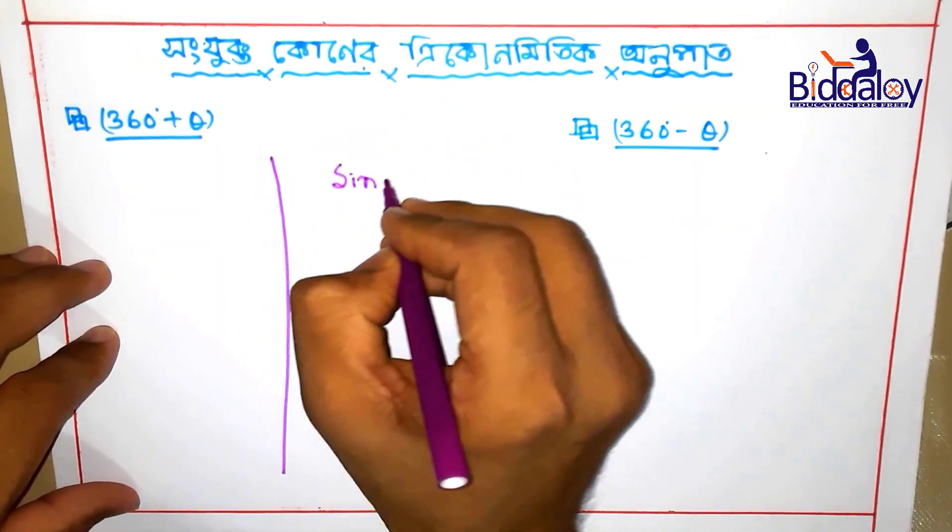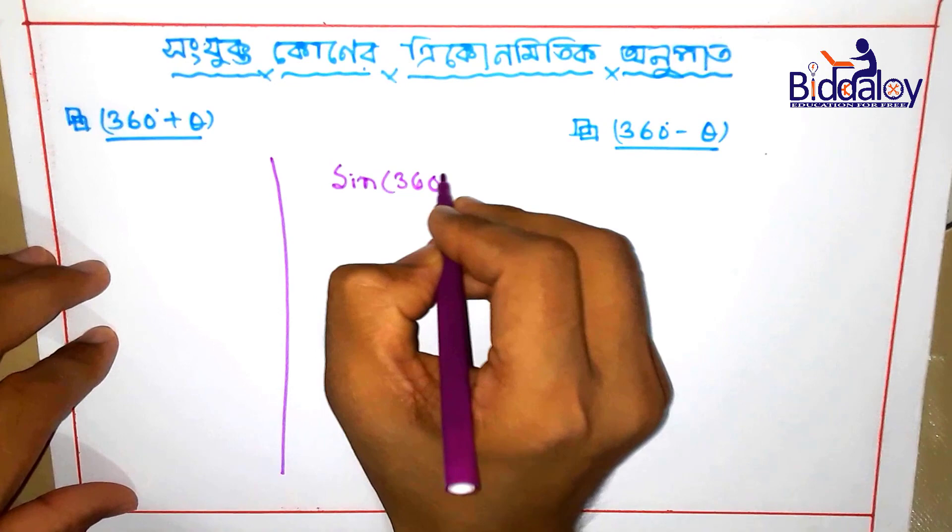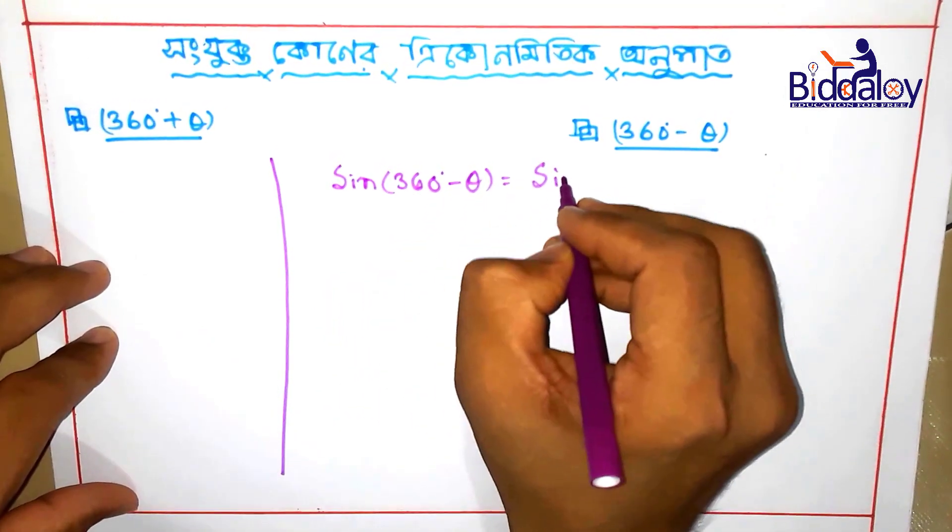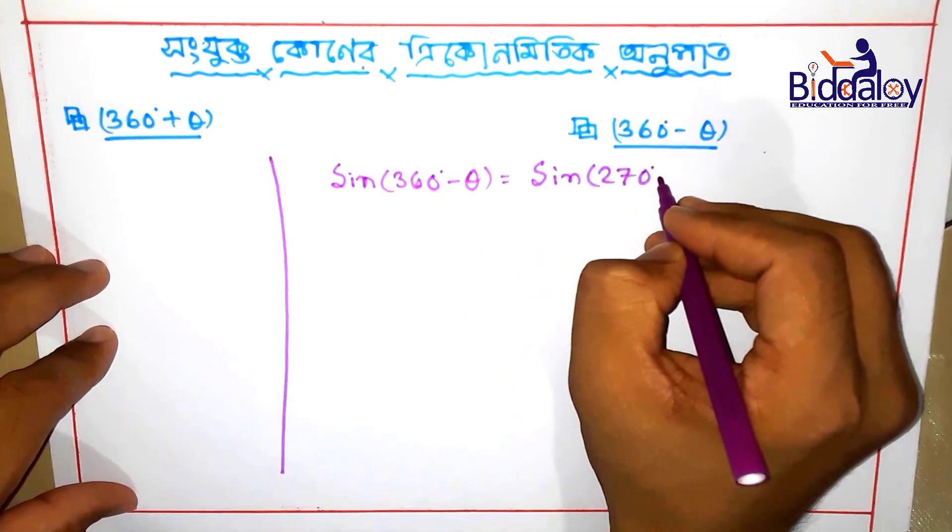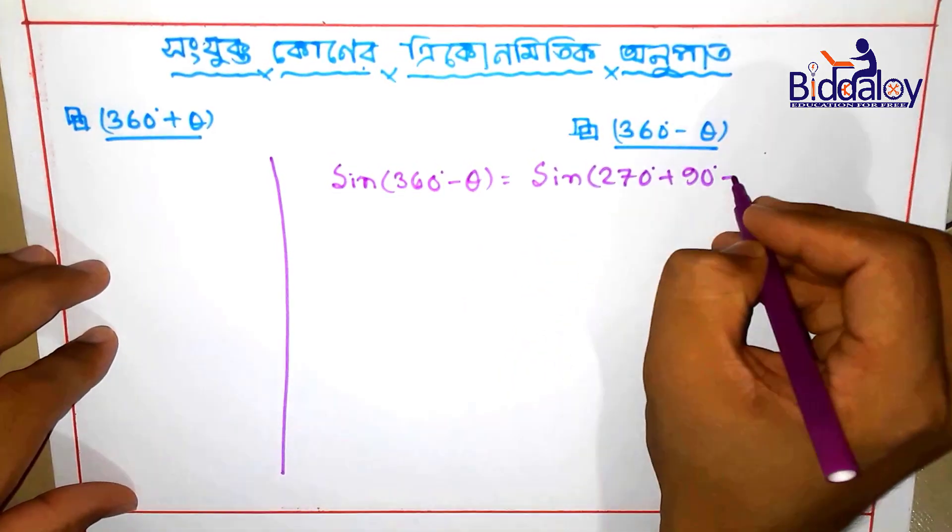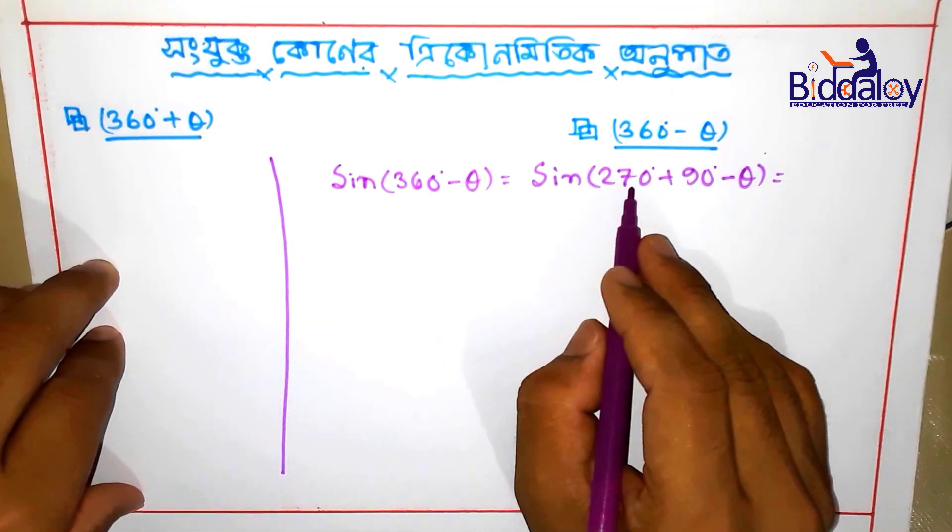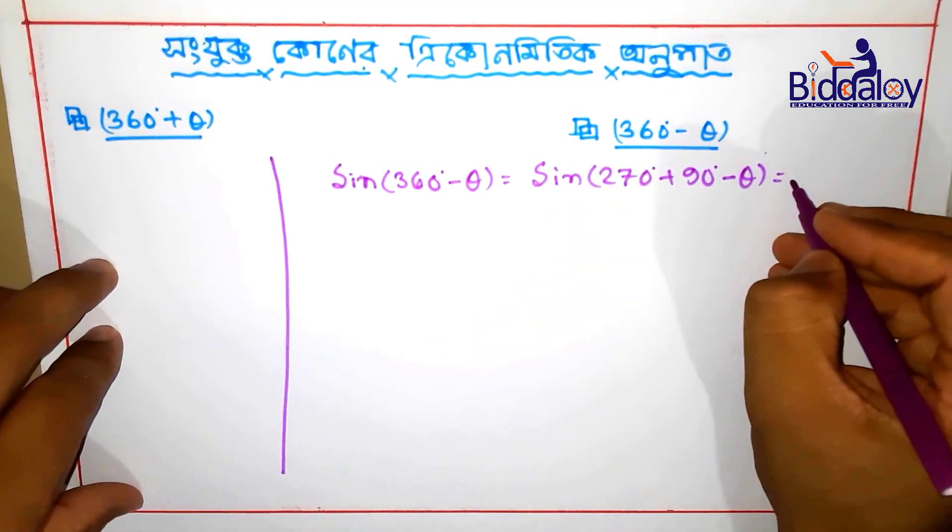Sign, there was sign. Sine minus theta, they're going to like the body sign, which is 90 plus theta minus. Sign 90 plus theta minus, that's minus cosine theta.